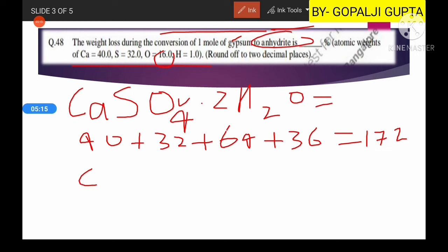The total will be 172. Then what is the formula of anhydrite? Anhydrite is simply CaSO4, just removal of 2H2O. The molecular weight will be 40 plus 32 plus 64, and the total will become 136.